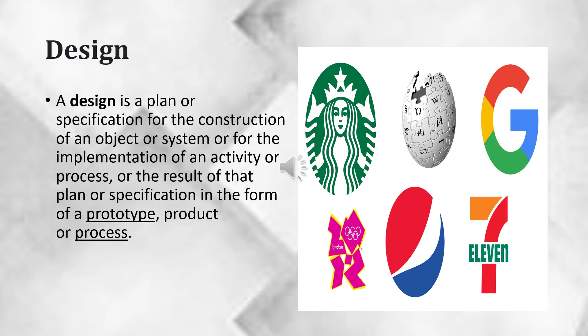A design is a plan or specification for the construction of an object or system, or for the implementation of an activity or process, or the result of that plan or specification in the form of a prototype, product or process. The verb to design expresses the process of developing a design. In some cases, the direct construction of an object without an explicit prior plan may also be considered a design activity. The design usually has to satisfy certain goals and constraints, may take into account aesthetic, functional, economic and socio-political considerations. Major examples of designs include architectural blueprints, engineering drawings, business processes, circuit diagrams and sewing patterns.